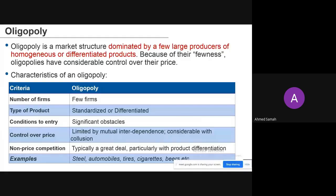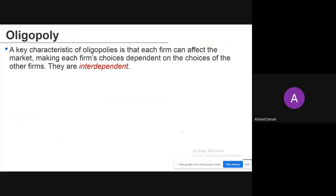For example, the telecom industry has very few firms with a large market share. The same applies to the banking industry, where the four largest banks have a huge share of the market. A key characteristic of oligopolies is that each firm can affect the market.